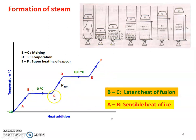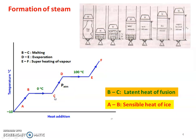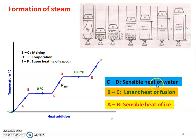In the third condition, it is now water. Water is heated and the temperature of the water increases. C is water at 0 degrees Celsius and D is water at 100 degrees Celsius, at atmospheric pressure. The heat added to raise the temperature of water at constant pressure, from C to D, is called the sensible heat of water.